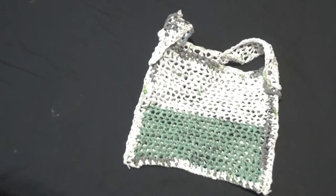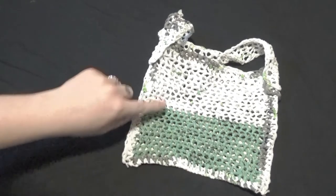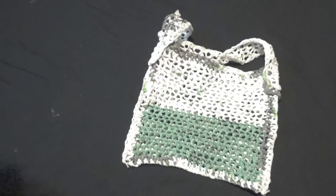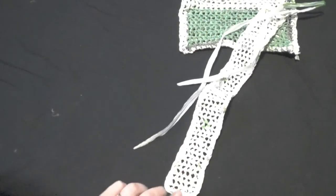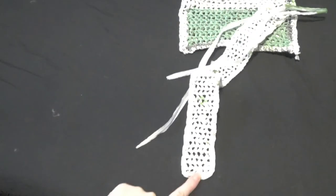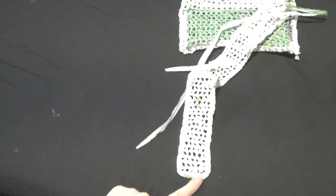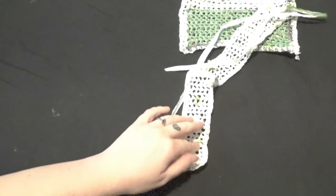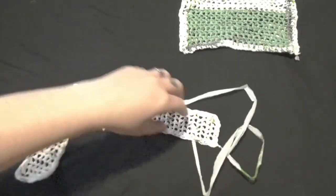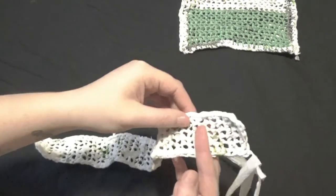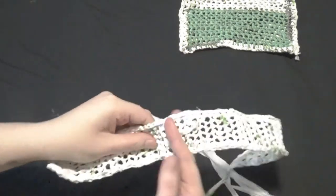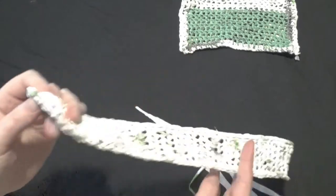And then the last thing you need to make is your handle. And like I mentioned earlier, it's the same pattern as the bag and just a different size. So what I did here for this one is I did five stitches across. So I started with six chains, then I single crocheted five back and forth, and then when I got to the end I went and finished it like we did with the bag. We single crocheted all the way around just like that.